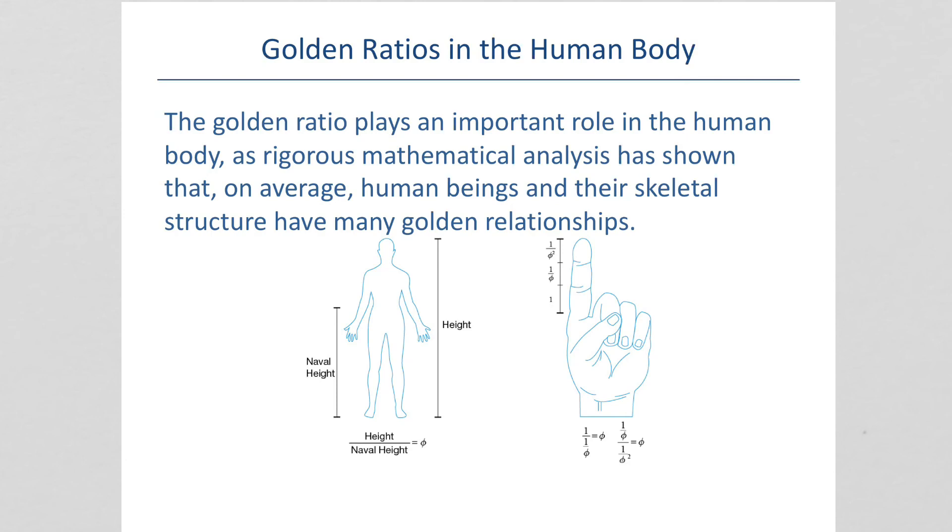Like, the height from your foot to your belly button, or your entire height divided by that navel height is the golden ratio. And your finger, this distance divided by this distance is the golden ratio. This distance in your finger divided by this distance is the golden ratio. You've probably seen those pictures where you've got a human standing with his arms out like this. That's an example of the golden spiral in humans.